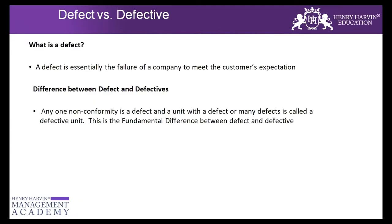Before getting into how to calculate process capability for discrete and continuous data, let's think about what comes to mind when we say process capability. The right definition is: whether the process is stable within certain limits — whether my process is capable enough to meet customer requirements, and what is my current process capability.